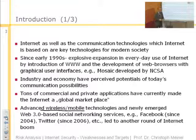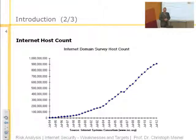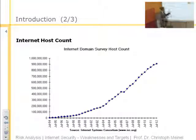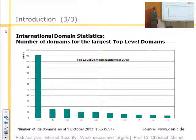All this makes the Internet a really basic infrastructure of our modern society. Here is a chart which shows that we have today about 1 billion Internet domain survey host count — almost 1 billion in 2012–2013.